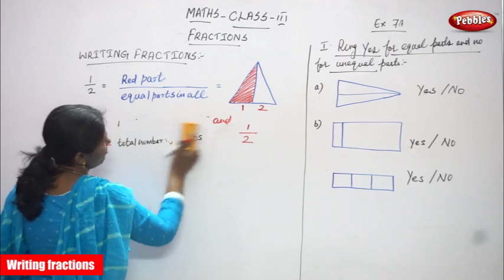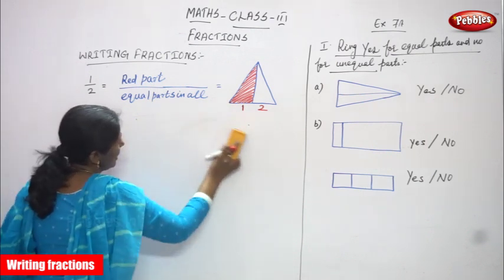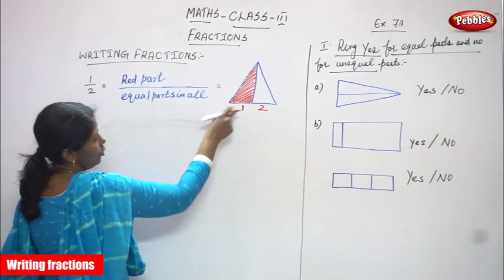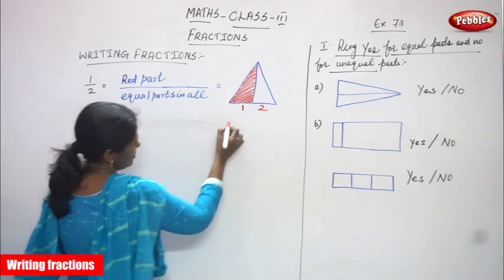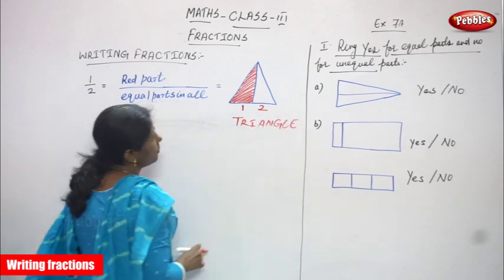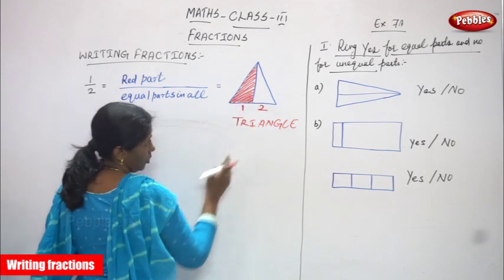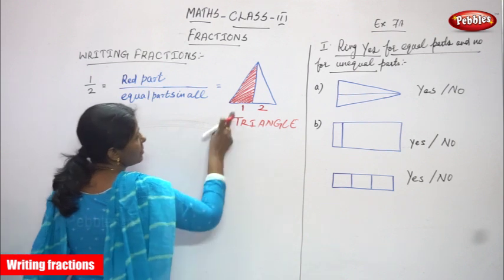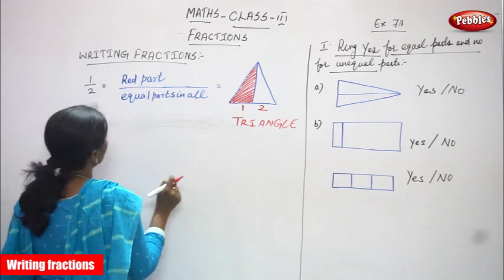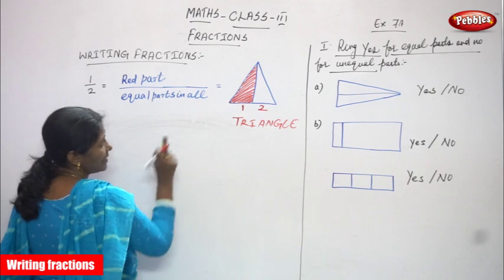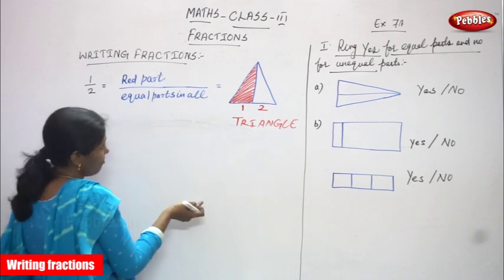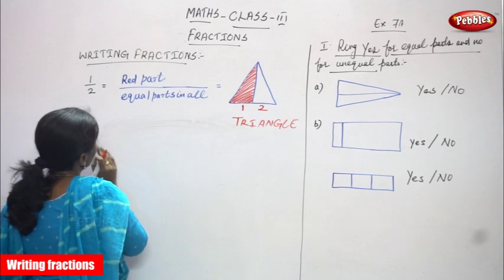Better I rub this definition because it's a little confusing. I don't want to write this definition. I'll explain once again. Writing fraction means I have drawn the object — that is a triangle. This triangle is cut into 2 equal parts — this is one part, this is another part. Total number of parts is 2, and I shaded only one part, that is red in color. Equal parts in all — total number of parts is 2. So, 1 by 2. This is the fraction we have written.